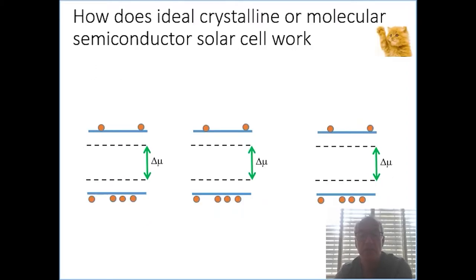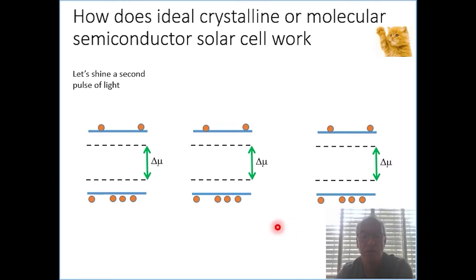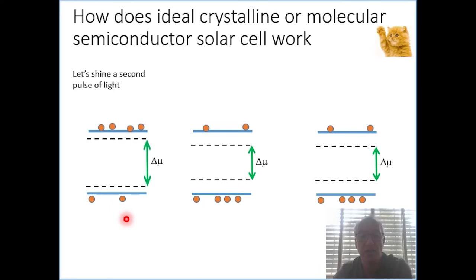So let's continue with what we just saw. The very basic absorption event generated these charges at the top. And of course, if we increase the light intensity or shine another pulse, we enhance the charge density.